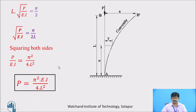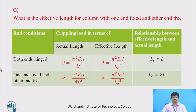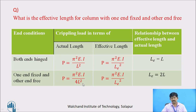What is the effective length of a column with one end fixed and the other end free? When both ends of the column are hinged, P equals π²EI/L², and using effective length it is π²EI/L_eff², so L_eff equals L. For the condition of one end fixed and other end free, we derived P equals π²EI/(4L²). Comparing with Euler's formula P equals π²EI/L_eff², we get L_eff equals 2L.